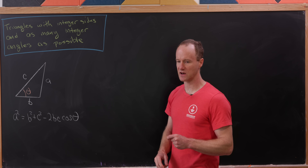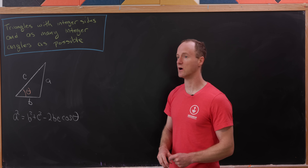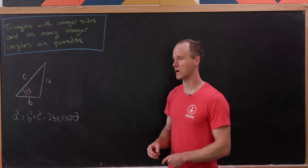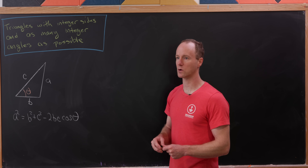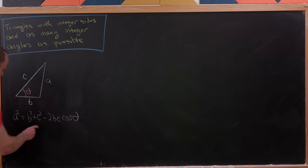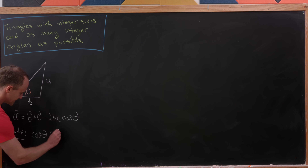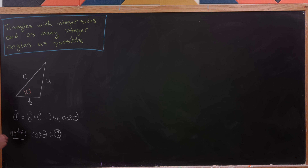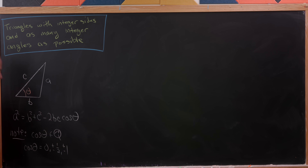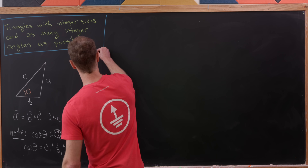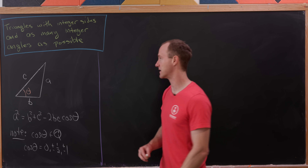If theta is 90 degrees, then cosine of theta is zero and we have a right triangle, leading us to a Pythagorean triple. Now if A, B, and C are integers, then cosine of theta is a rational number. In a previous video, we showed that the only rational values of cosine are zero, plus or minus one-half, and plus or minus one.